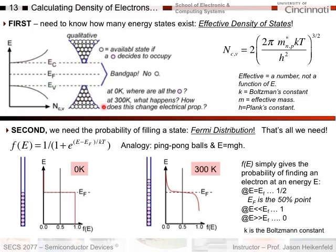Going down to the valence band, you have something similar — as you go further away from the valence band, the number of states increases. If I plot that graphically, with energy on this axis, you can see that as I go to an increasing number of states, I'm further away from the conduction band edge. In this course, we don't use the full mathematical function; instead we use the effective number — hence the term effective density of states — which simplifies the mathematics.